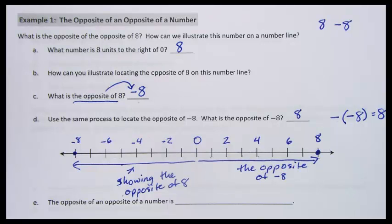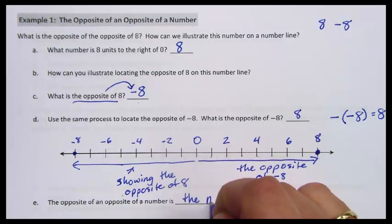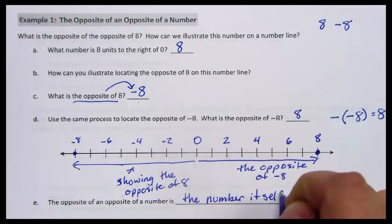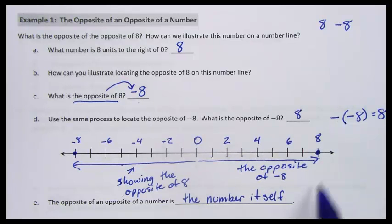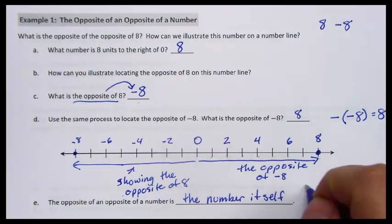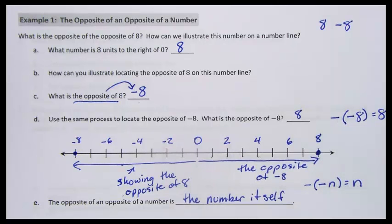So if we want to say that the opposite of an opposite of a number is the number itself. So the opposite of the opposite of 8 is 8. The opposite of the opposite of 7 is 7. The opposite of the opposite of any number is the number itself.